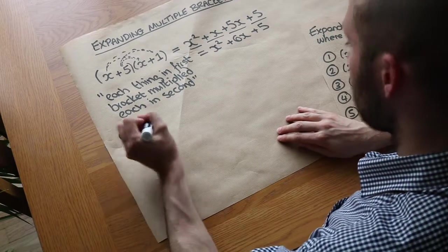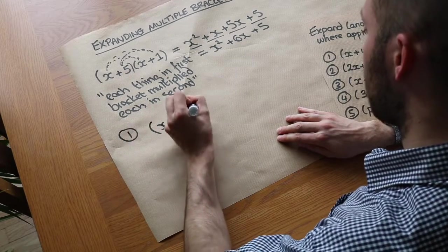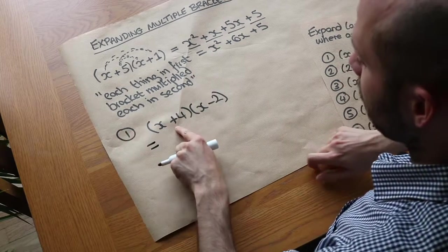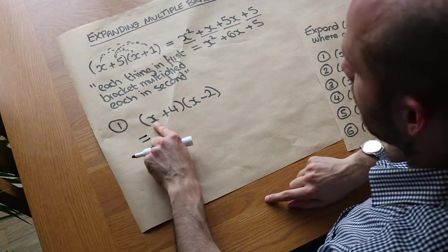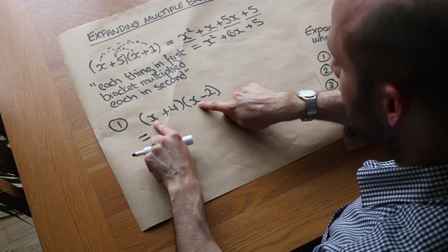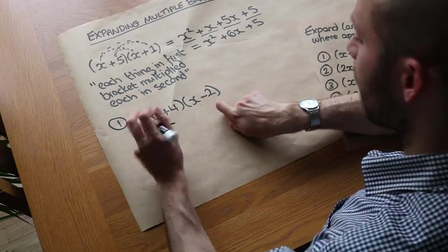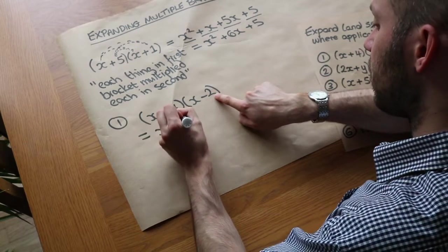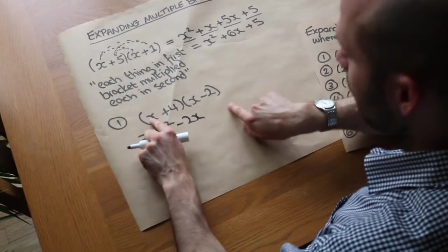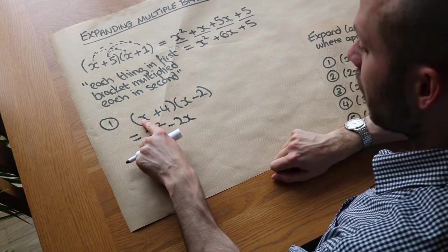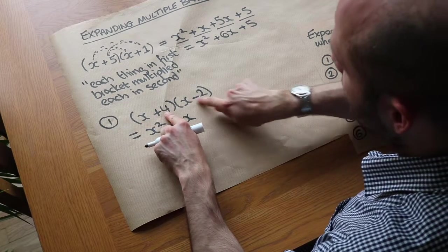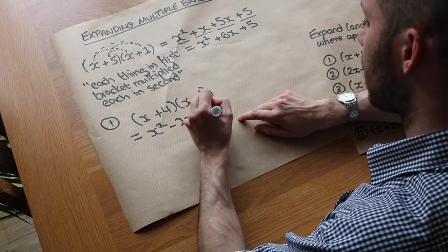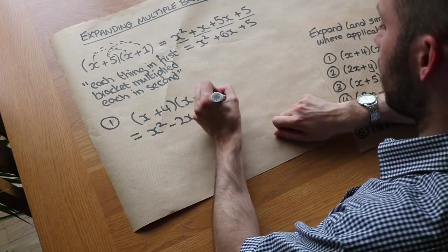Let's do another example: (x + 4)(x − 2). We do each thing from the first bracket times each from the second. So x times x is x squared. Then x times minus 2 is minus 2x. Moving on, 4 times x is plus 4x. And 4 times minus 2 is minus 8.